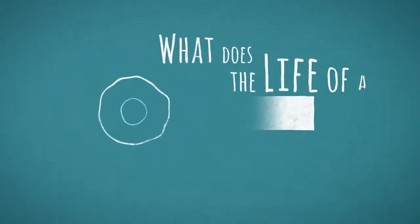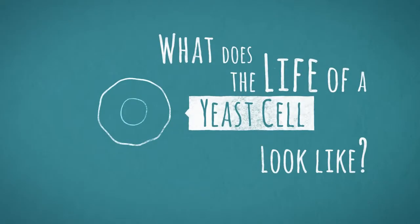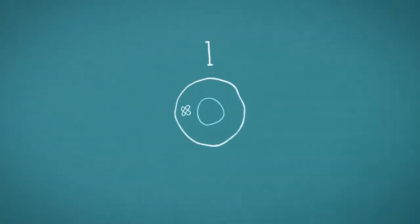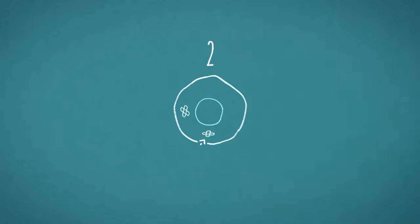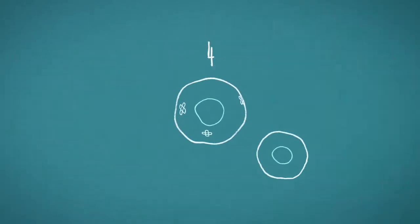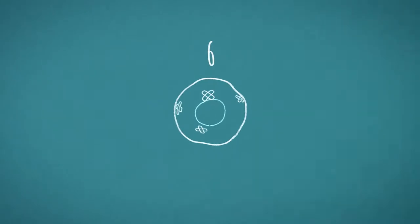What does the life of a yeast cell look like? A yeast cell produces a new cell approximately every two hours. A harmless scar is left behind on the mother, but changes inside the mother have begun to take place that are not yet fully understood and contribute to its aging.